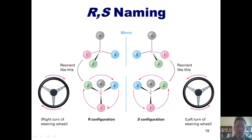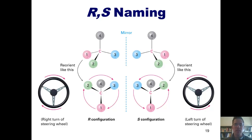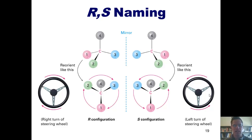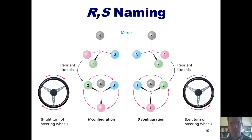One way to remember this: if you were holding a steering wheel and wanted to turn right, you would turn it clockwise. Thus, clockwise is R, because turning clockwise turns the car right, which begins with the letter R. If you were turning the wheel left, that would be counterclockwise, which corresponds to S. So remember: right or clockwise corresponds to R, and sleft or counterclockwise corresponds to S — R for right and S for sleft.